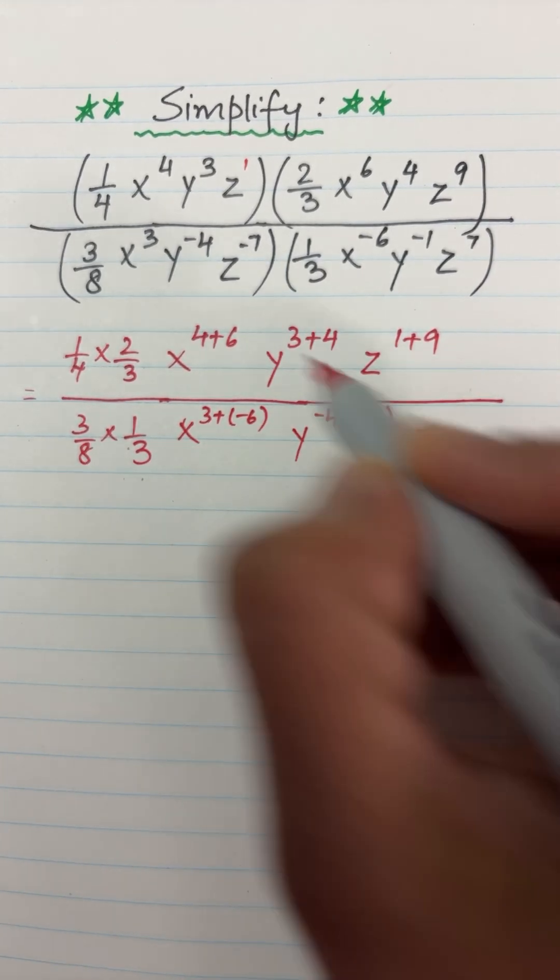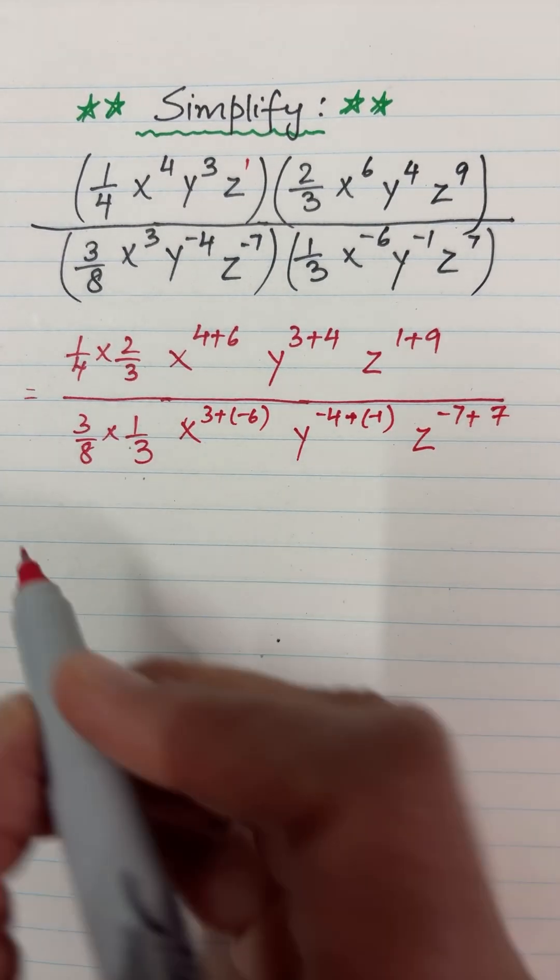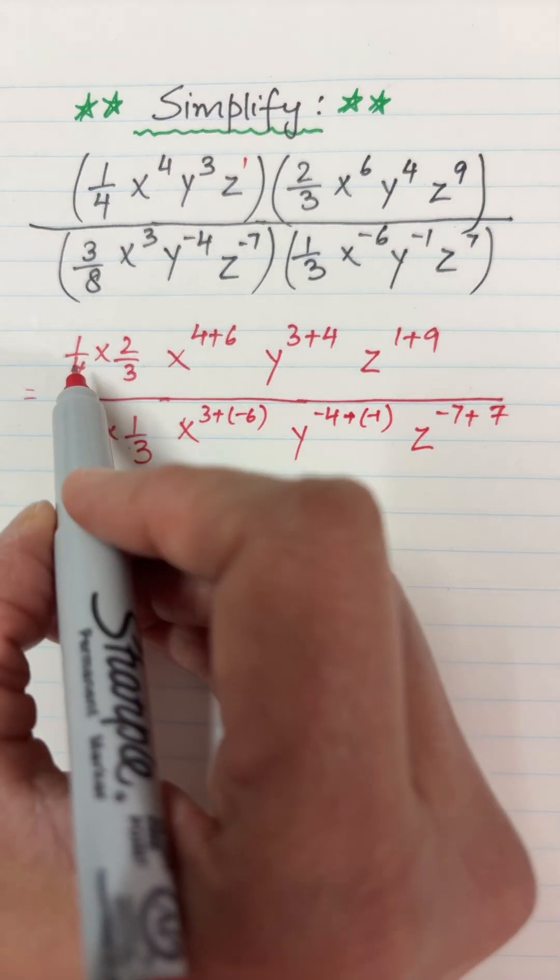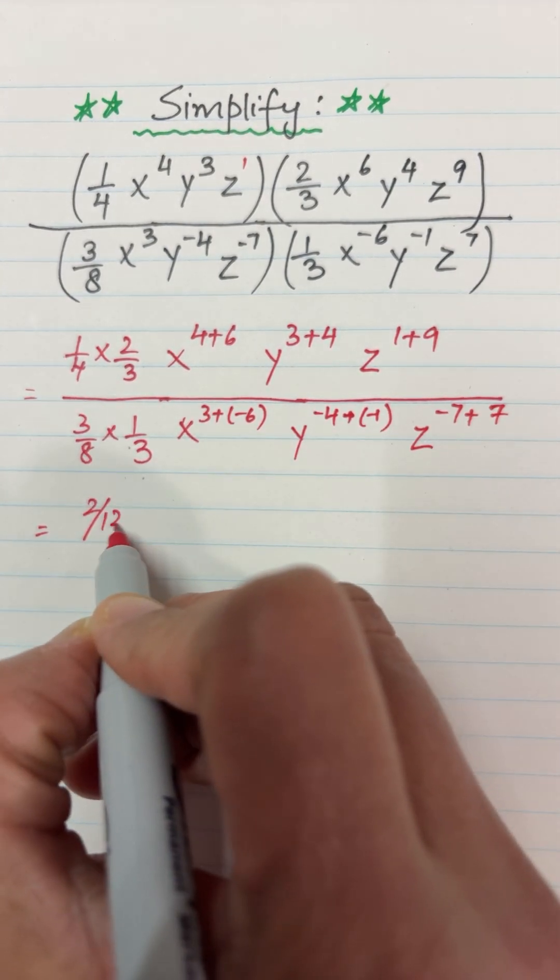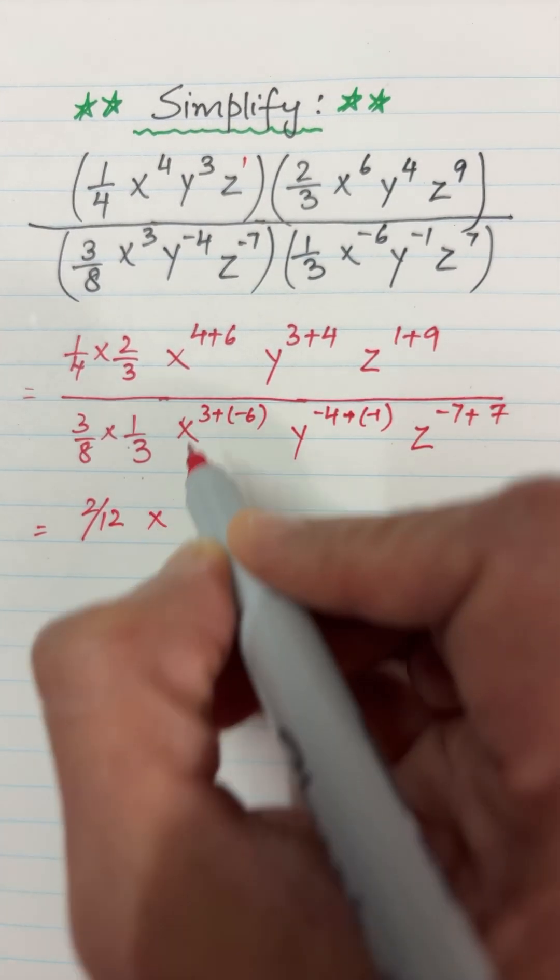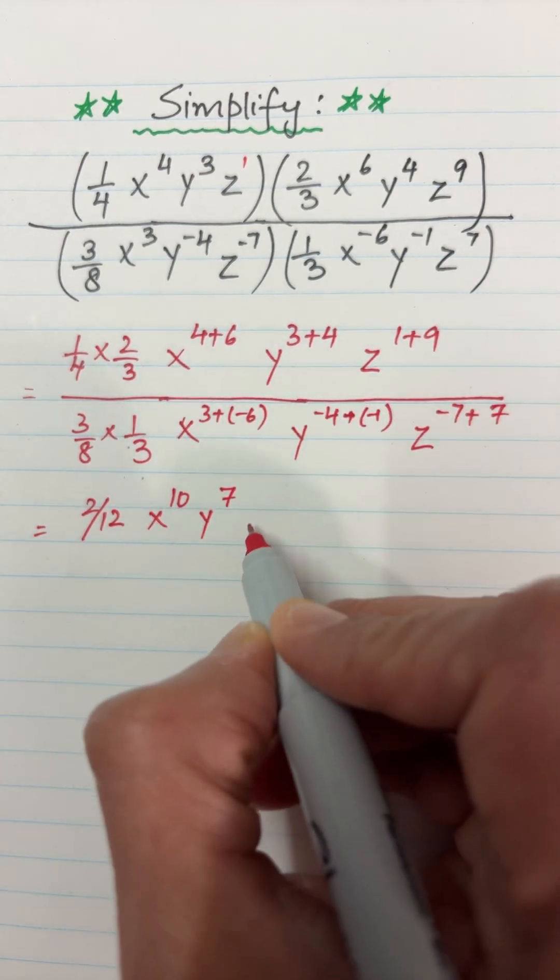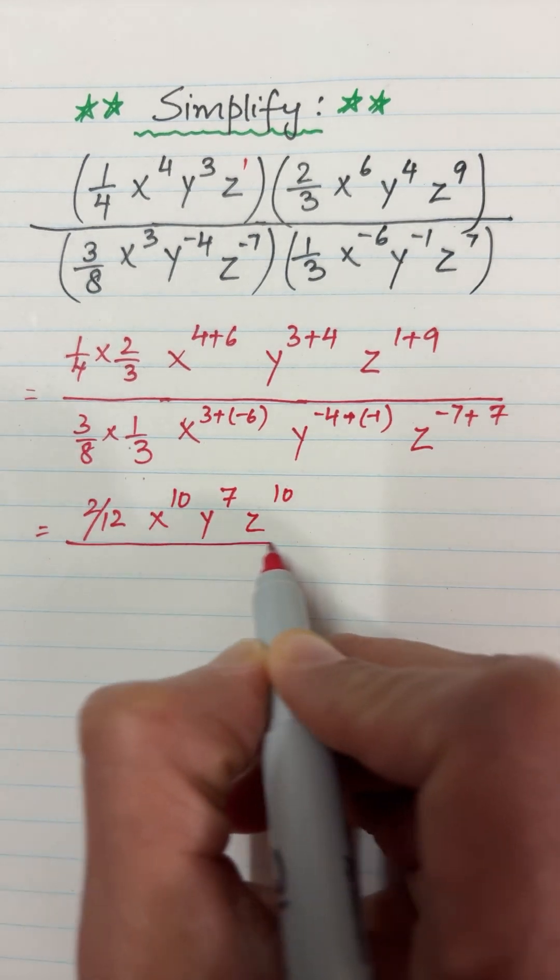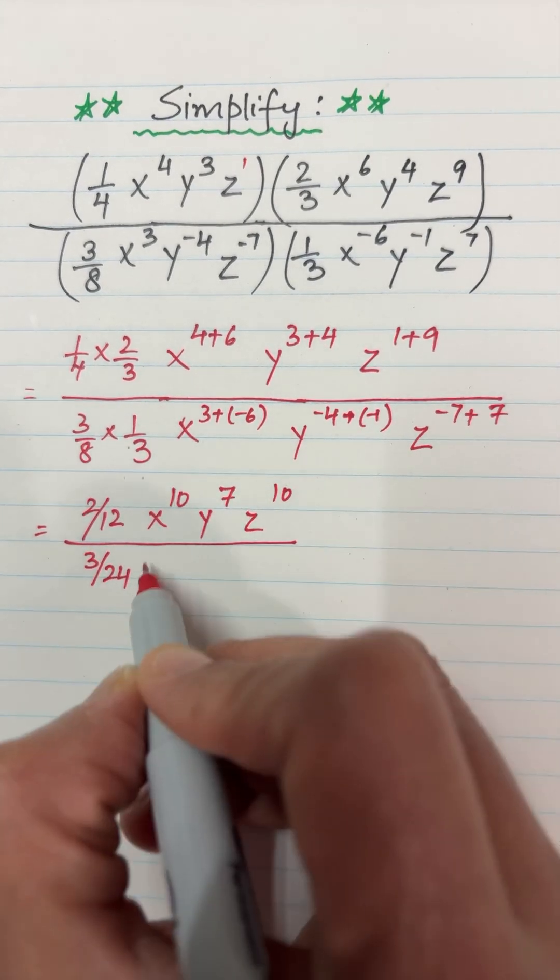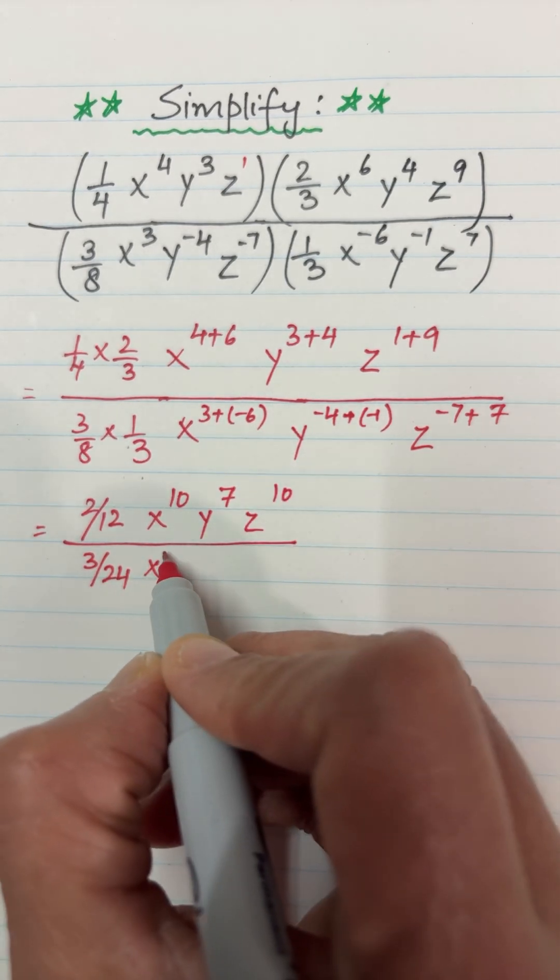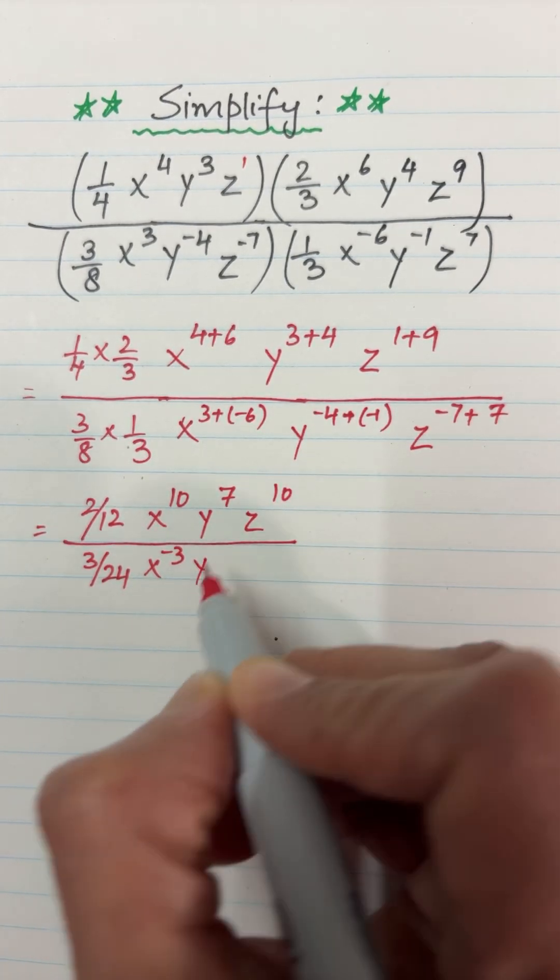Now multiply the fractions: 1 times 2 is 2, 4 times 3 is 12, giving x^10, y^7, z^10. For the denominator: 3 times 1 is 3, 8 times 3 is 24, x^(3 + (-6)) is x^(-3), y^((-4) + (-1)) is y^(-5), z^((-7) + 7) is z^0.